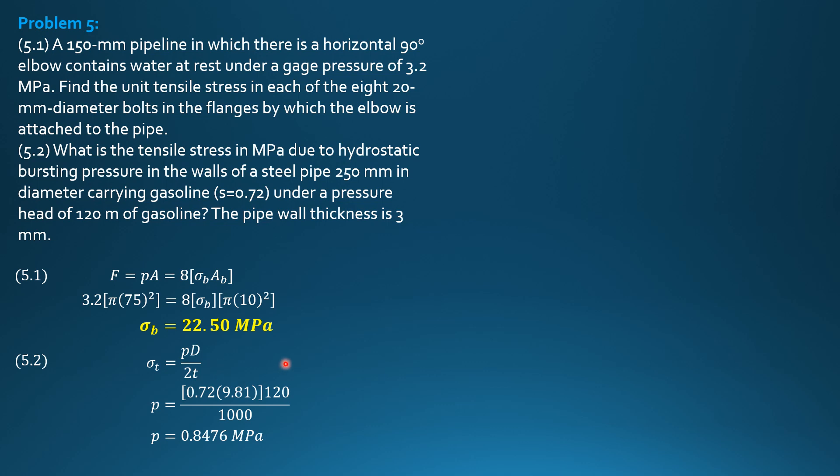Substitute in the formula: 0.8476 megapascals, diameter 250 mm divided by 2 times thickness of pipe wall 3 mm. So the stress is equal to 35.32 megapascals.